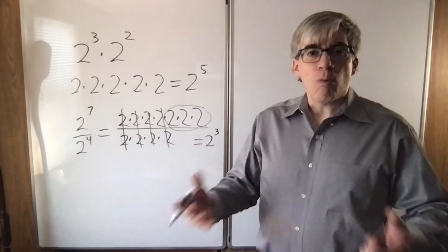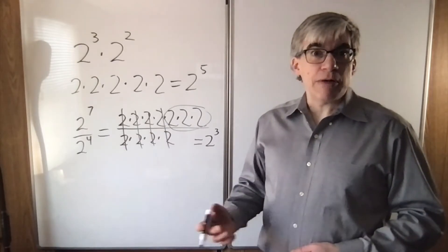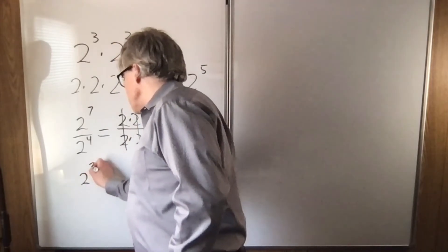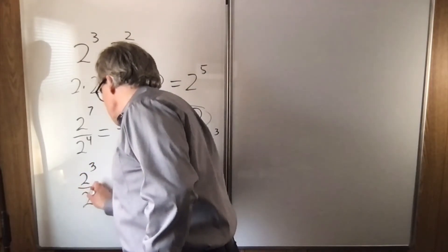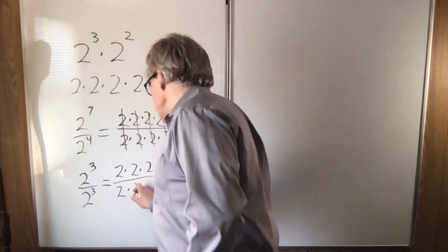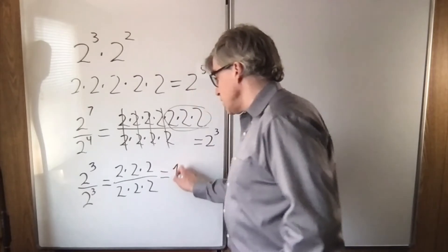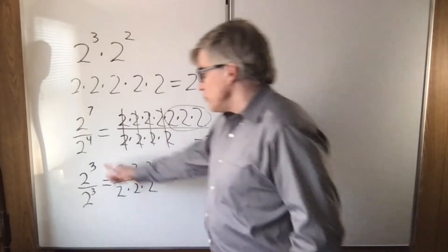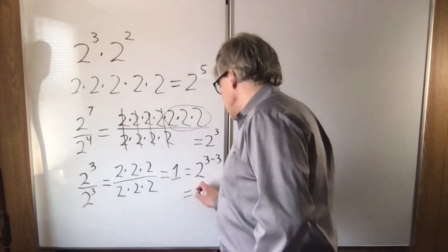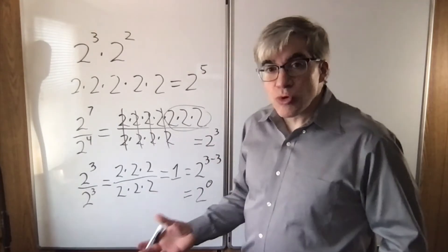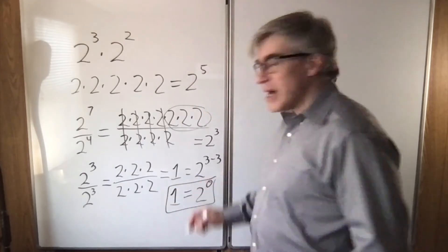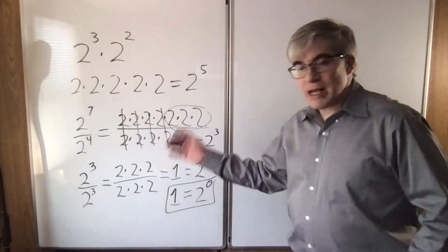Some people wonder, why is two to the zero equal to one? Well, let's follow that rule. Suppose you have two to the third over two to the third. That would be two times two times two over two times two times two. Well, that's one, but if you follow the rule, that's two to the three minus three. That's two to the zero. So if we want the rule to keep working, that's why we say that anything to the zero power is one because it all cancels itself out.